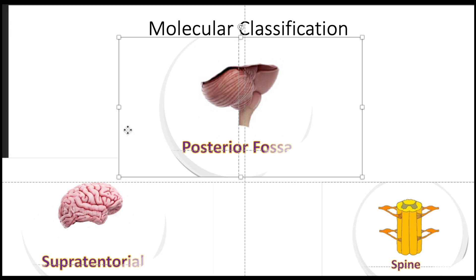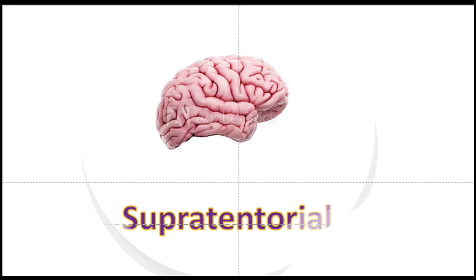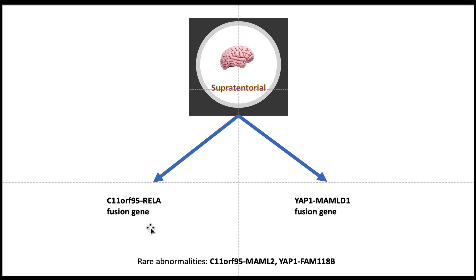Let us look at the supratentorial ependymomas. The common molecular abnormality in supratentorial ependymomas is fusion genes. There are two fusion genes commonly seen: the first is C11-ORF95 RELA, and the second is the YAP1-MAMLD1 fusion gene. Other fusion genes may be associated with supratentorial ependymomas but these occur rarely.